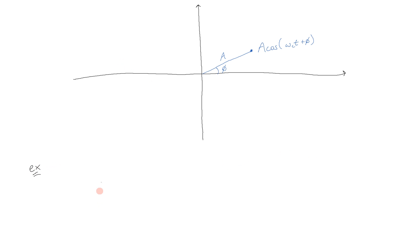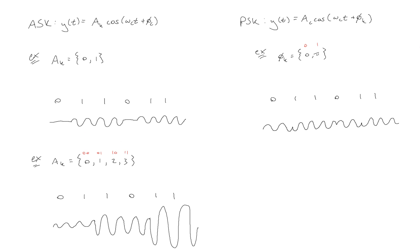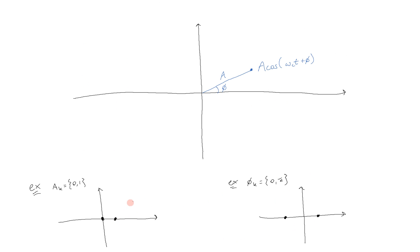Specifically, every point on a constellation diagram corresponds to an entire waveform of the form A cosine of omega C T plus phi, where in a polar representation, the distance from the origin is A and the angle from the positive x-axis is phi. So we can represent every single possible Y of T as a point on this constellation diagram. For example, for the first ASK scheme with A sub K equal to 0 and 1, we would have a point at amplitude 0 and a point at amplitude 1 with phase 0. For our PSK example with amplitude 1 and phases 0 and pi, it would be a point at amplitude 1 phase 0 and another at amplitude 1 phase 180.